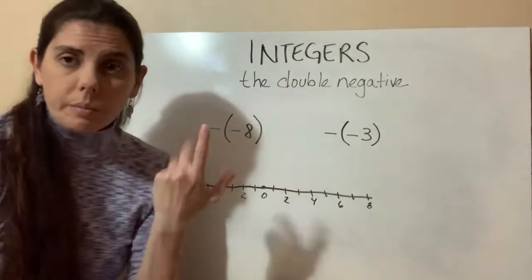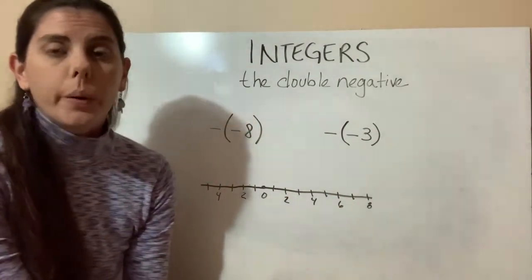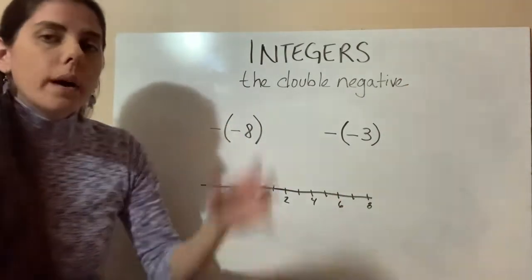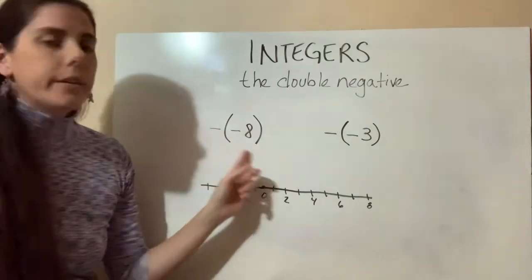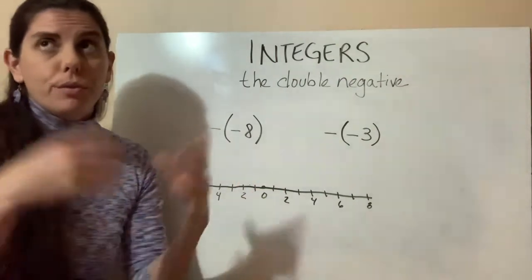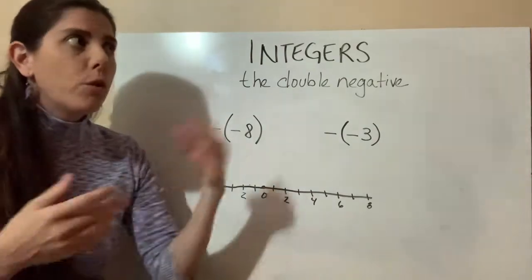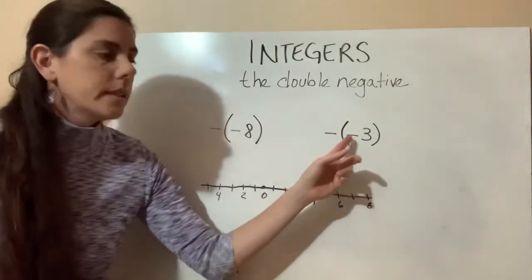Another brief concept that's touched on in section 3.1 is the double negative. So what happens if you have something like this in a problem? You have three minus a negative eight, or you have fourteen minus a negative three.